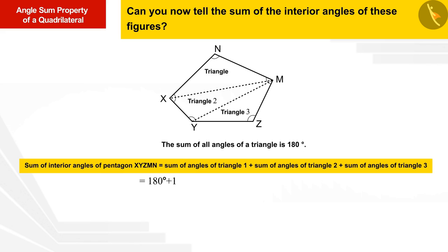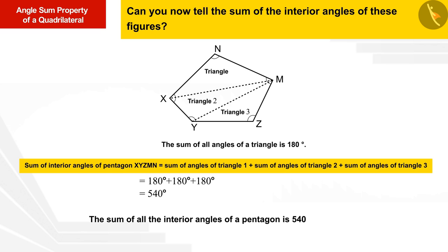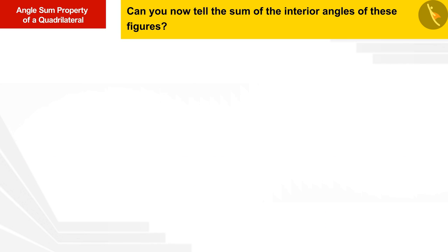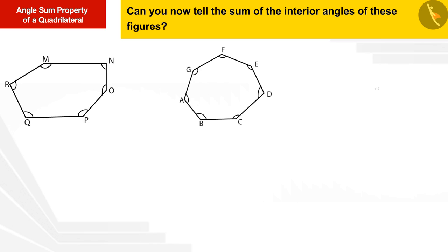We know that the sum of all the angles of a triangle is 180 degrees. If we add the sum of the angles of the three triangles, we get the sum of the interior angles of the pentagon, which is 540 degrees. Therefore, the sum of all the angles of a five-sided polygon is 540 degrees.